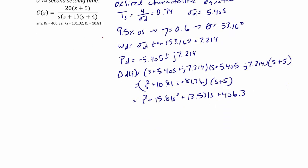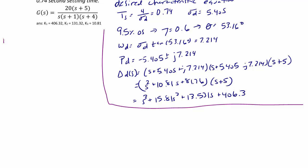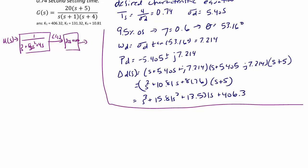Next we will derive the state equations. We write the transfer function by splitting it: input U(S) goes into 1 over S cubed plus 5S squared plus 4S, giving output C(S), which then goes into 20S plus 100 to give output Y(S). So C(S) over U(S) equals 1 over S cubed plus 5S squared plus 4S, or equivalently U equals C triple dot plus 5C double dot plus 4C dot.